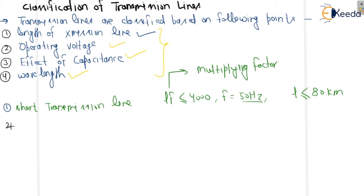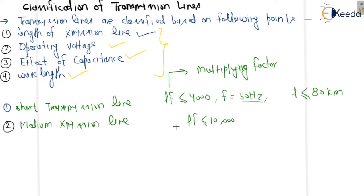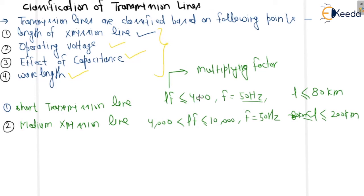The second type is the medium transmission line. In the case of a medium transmission line, lf lies between 4000 and 10,000. So for f equal to 50 Hz, you will get the value of L lying between 80 kilometers and 200 kilometers.